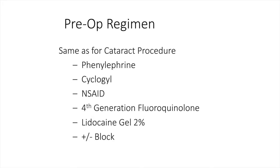The pre-op regimen includes phenylephrine, cyclogel, NSAID — very typical of what you might do with cataract surgery — including a fourth-generation fluoroquinolone or whichever antibiotic is available. Lidocaine gel for topical anesthetic, plus or minus a block. With ECP, it really depends on your experience and your anesthesiologist. If you have a good anesthesiologist practiced with ECP, you can typically use a topical approach augmented by medications like propofol for a short period. You can also augment with intracameral lidocaine to decrease sensitivity to the laser, or opt for retrobulbar or peribulbar anesthetic depending on the patient.